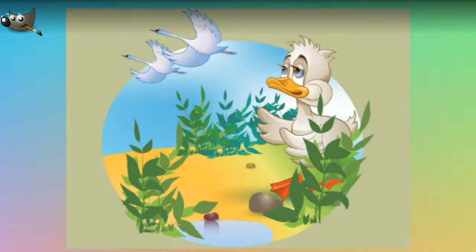Then all at once the duckling could flap its wings. They beat the air more strongly than before and bore it strongly away. And before it well knew how all this happened, it found itself in a great garden where the elder trees smelt sweet and bent their long green branches down to the canal that wound through the region.